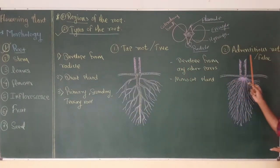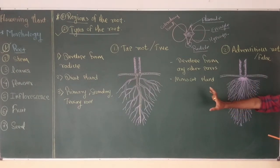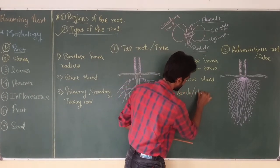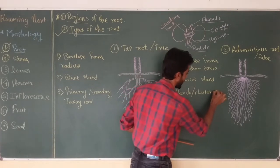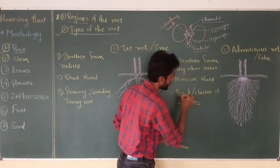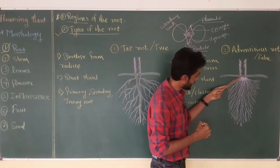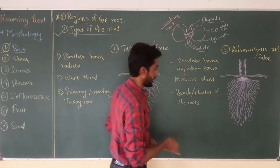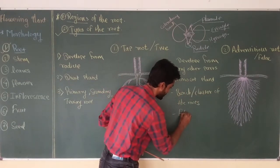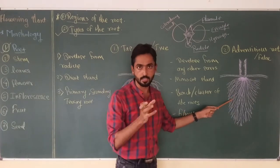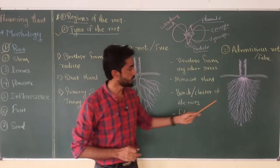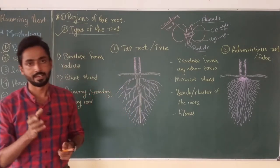In the case of adventitious root or false root, we are unable to see the differentiation of branches like in the tap root. In this type of root system, a bunch or cluster of roots arises from the base of the stem. They are generally thin roots of equal sizes, so their appearance looks fibrous. Many roots in grass show this fibrous appearance, and this type of root system is also called fibrous root because it does not show differentiation of branches like primary, secondary, and tertiary.